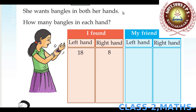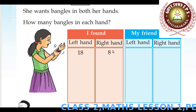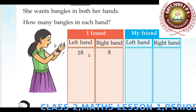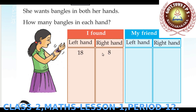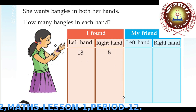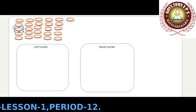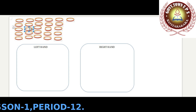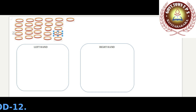Nandina wants bangles in both her hands. Left hand: 18, right hand: 8. Let's count all the bangles: 1, 2, 3 … 26. One option is to wear 18 bangles in the left hand and 8 bangles in the right hand. 18 plus 8 equals 26 bangles total.